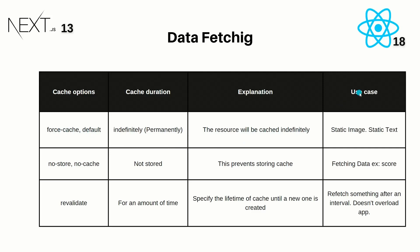The use case for 'force-cache' and 'default' is for static content — like images on an About Us page, a contact form, or a home page. You can store those images in cache permanently using force-cache, so they remain available at all times.